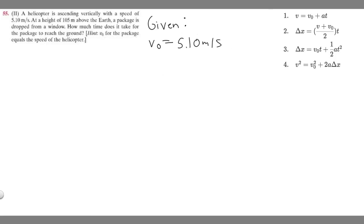We're also told that at a height of 105 meters above the earth, a package is dropped from the window. So we've got our helicopter - I'm just going to draw a car because I can't draw a helicopter - but it has a package and then it falls down 105 meters. The change in position of the package is 105 meters, and it's going down, so it's going to be negative. So delta Y is going to be minus 105 meters.